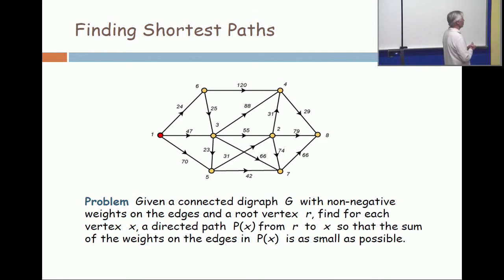Our problem is, given a root node with non-negative weights, find for each vertex a directed path from the root to x, so that the sum of the weights on the edges is as small as possible. Now, this is something like spanning trees, but not quite, because we have directions. On the paths that you choose, you can only walk on the edges in one direction.